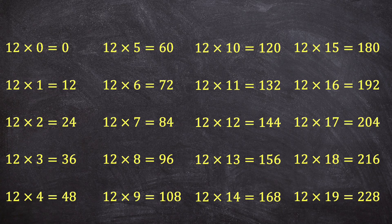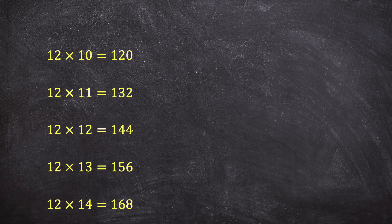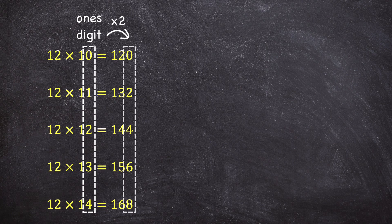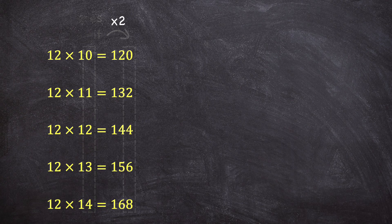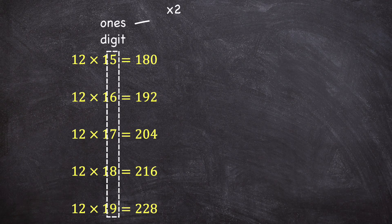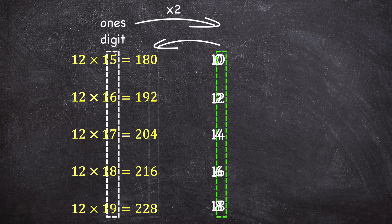But how do you get the number of ones in the product? Let's look at this group of multiples of 12 to analyze the pattern. You look at the ones digit of the factor being multiplied by 12, and then you double it, and that becomes the ones digit of your product. But when looking at the next group of multiples of 12, when you double the ones digit you get a two-digit number — just take the ones digit of that number, and that becomes the ones digit of your product.